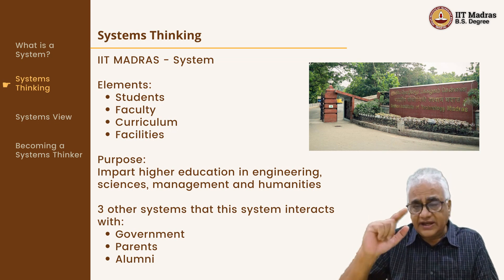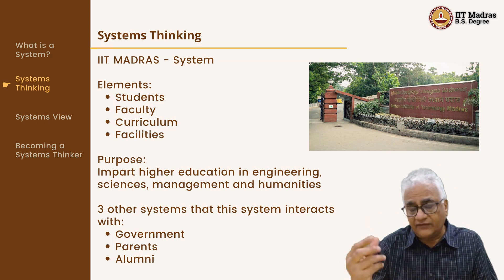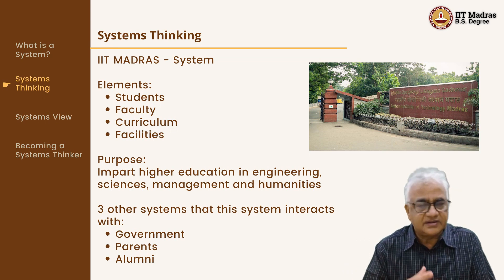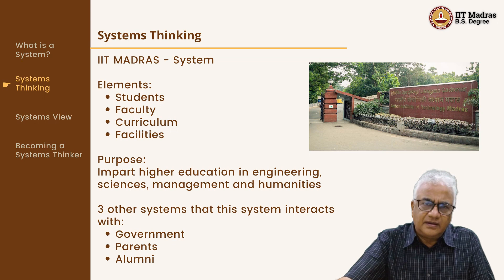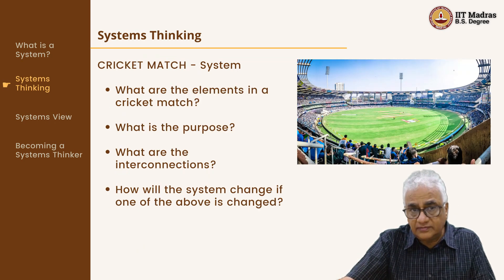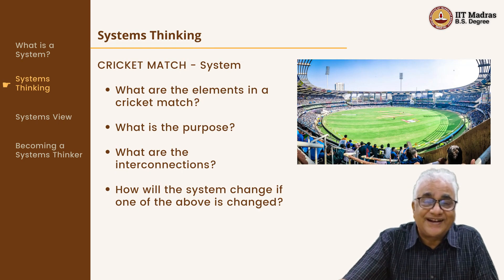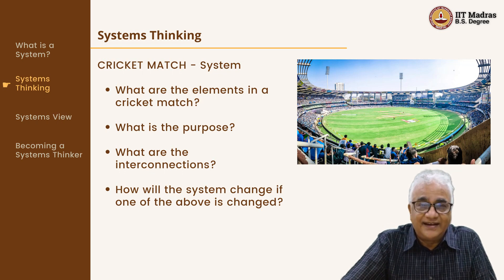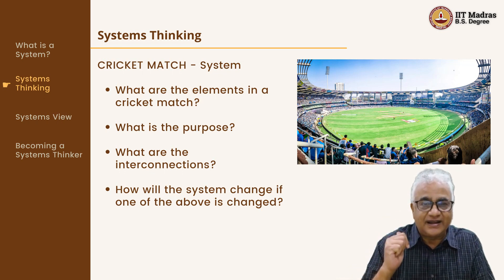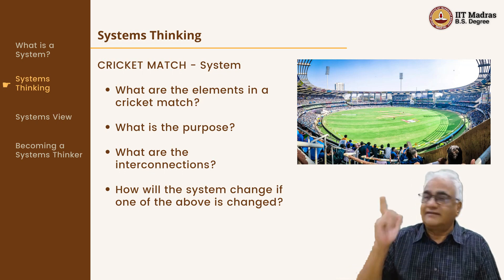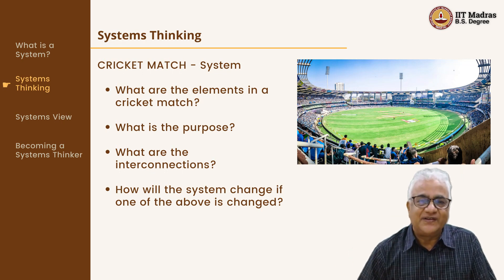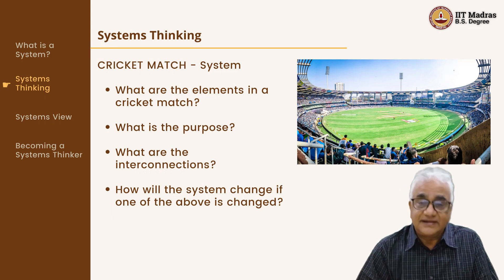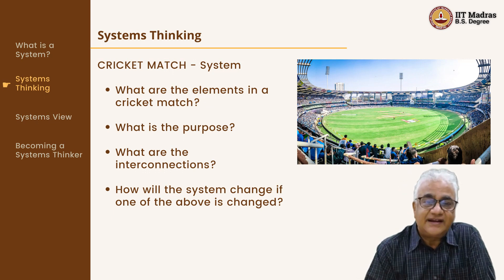Now start thinking of other systems — think of the government system, the parent system, the alumni system. From there we go to a cricket match. I just told you to think of systems. Actually, there is a cricket match going on right now — I can't see it because I am interacting with all of you. So a cricket match is a system. What are the elements in a cricket match?